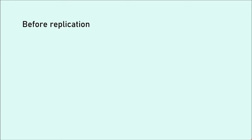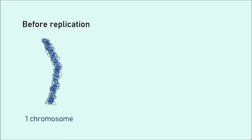Let's rewind back to the G1 stage. G1 is the stage before replication — the cell is nowhere near dividing yet. Shown here is one chromosome, which is one full DNA molecule. We also say that this is one chromatid. So a structure representing one full molecule of DNA before replication can be referred to as both one chromosome and one chromatid. In other words, the definition of a chromosome before replication is one chromatid.